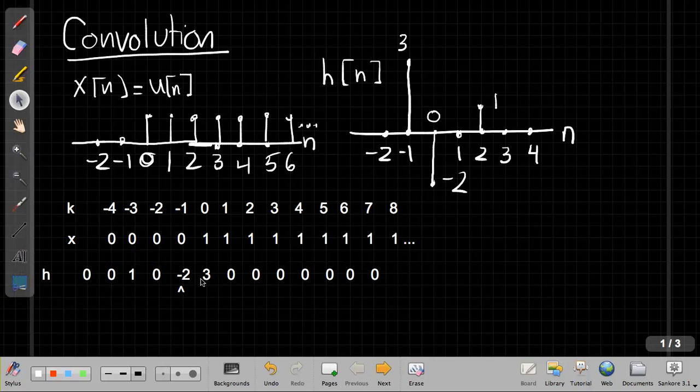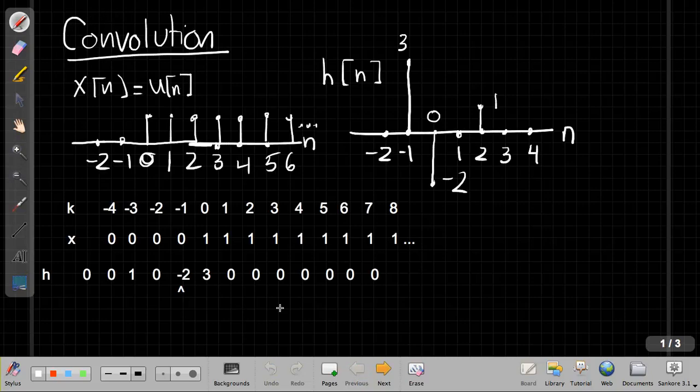And I get all 0s up to here, and then 3 times 1. But again, because this arrow is lined up under minus 1, this is finding the output at time minus 1. So again, if I sort of keep my little piece of scratch paper over here on the second page, I'm going to have y of minus 1 is equal to 3. I have 3 times 1.